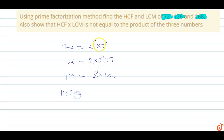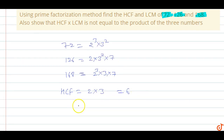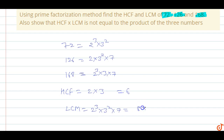The HCF of these three numbers is 2 into 3, which is equal to 6. And the LCM is 2 power 3 into 3 power 2 into 7.